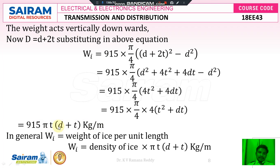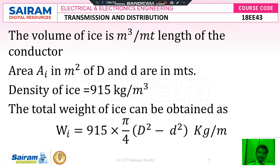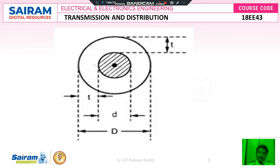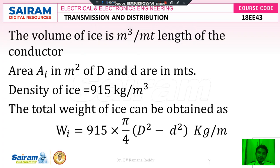Therefore the weight of ice per unit length, Wi, equals the density of ice into π × t × (d + t) kg/m. Substituting the density of ice as 915, the overall formula is: Wi = 915 × π × t × (d + t) kg/m. This is the overall formula for the weight of ice, because ice forms as one layer on top of the surface area of the conductor. Thank you.